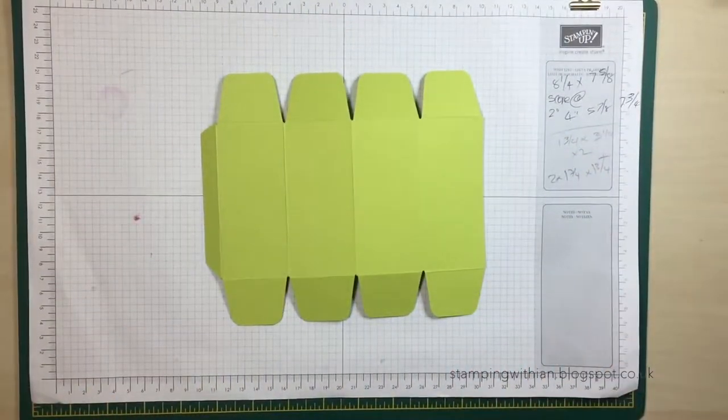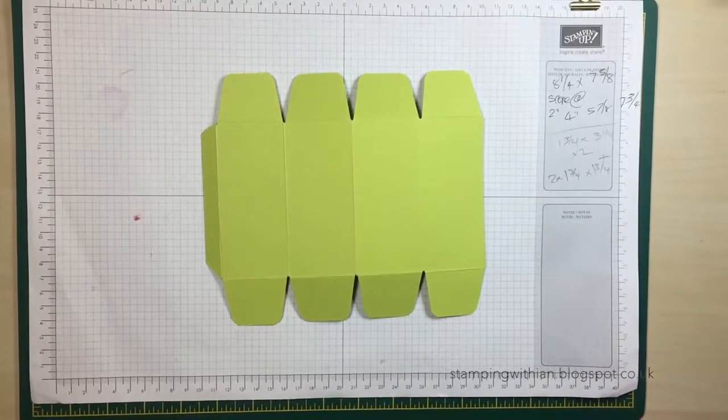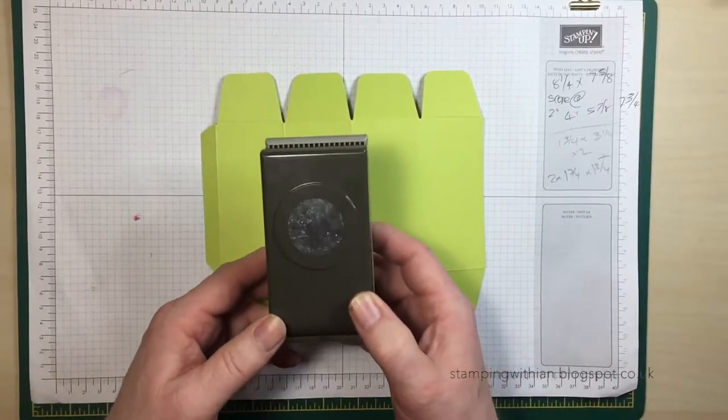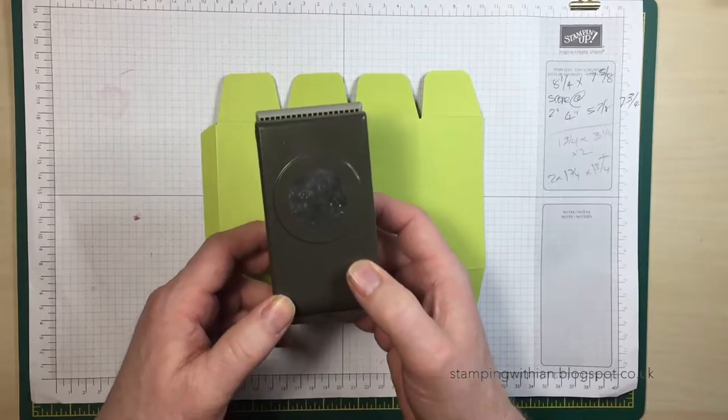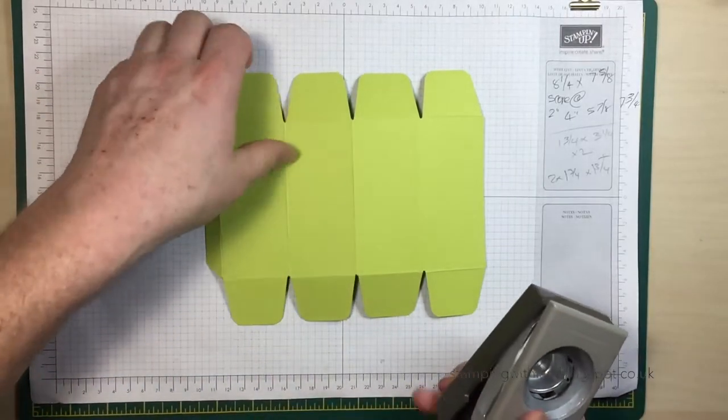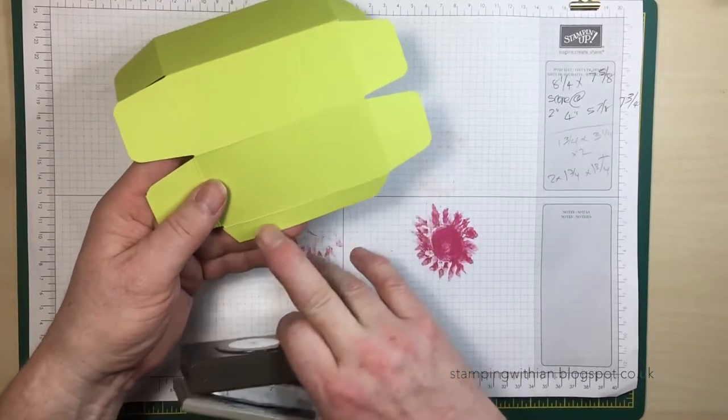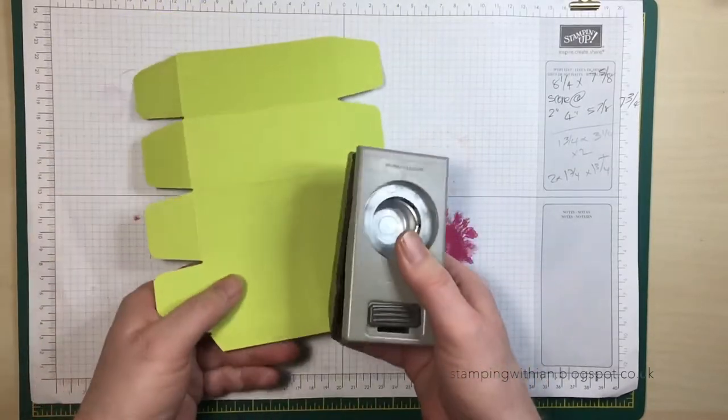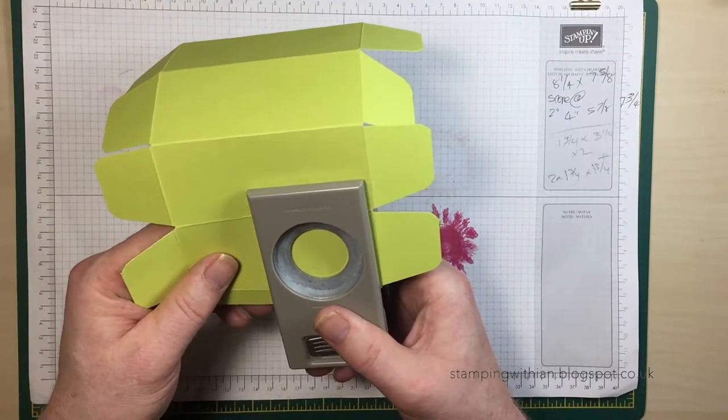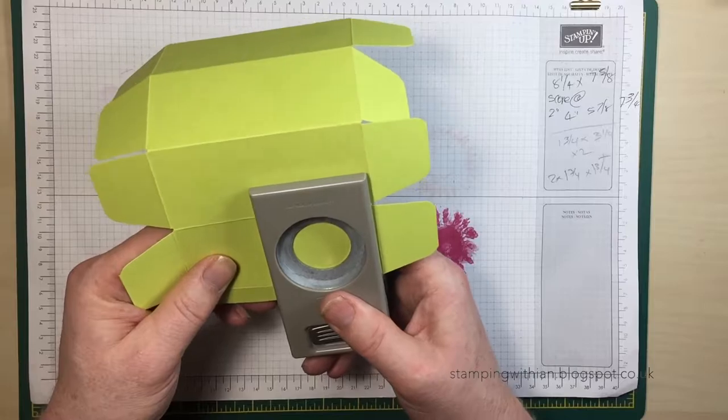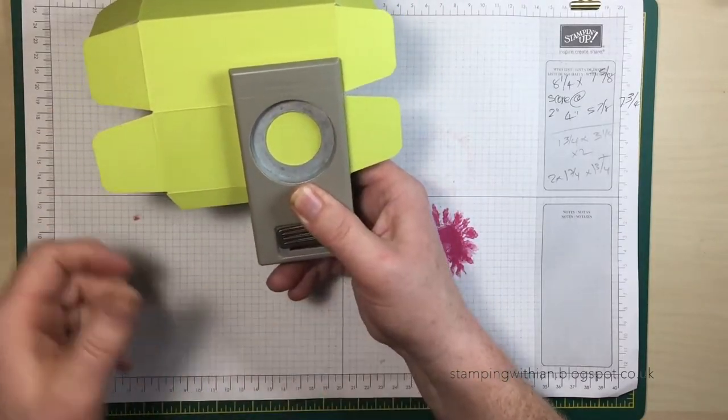Okay, we're doing well. Taking your 1 and 1/2 inch circle punch, we're going to make two holes in this piece here next to the flap. Okay, so I'll kind of line it up next to there.